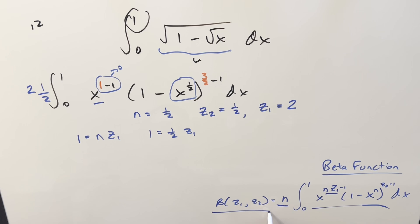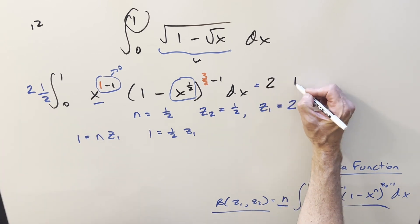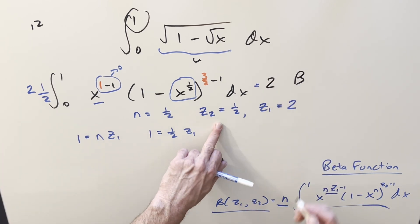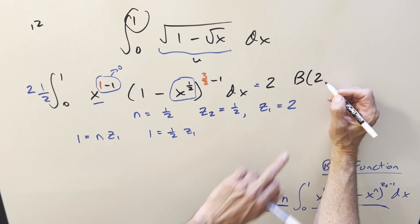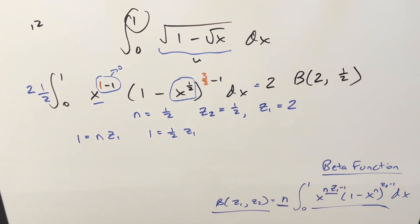And then from here, we just need to plug in. We have our beta function. We have to, don't forget, we've got this 2 out front. So what this is going to become is it's going to be 2 times beta function, plug in 2 for z1, 1 half for z2. And then to calculate this, this is just kind of shorthand. And the formula for this is actually just gamma of z1 times gamma of z2 over the sum of the two values, gamma of z1 plus z2.